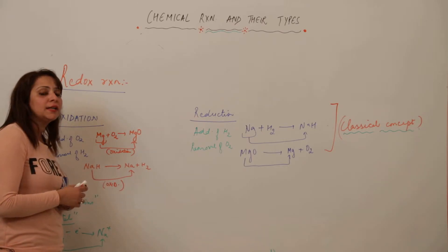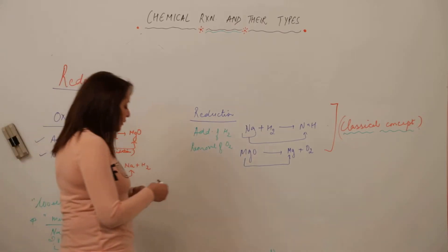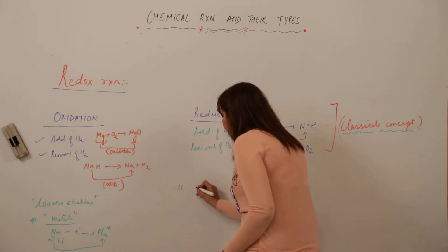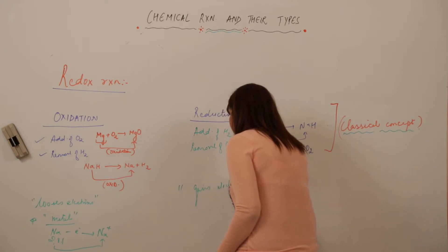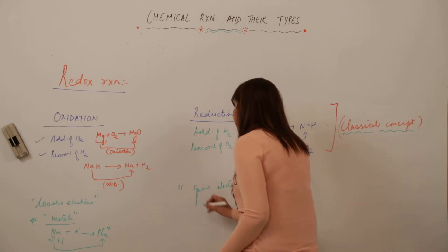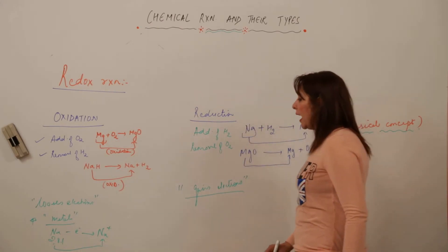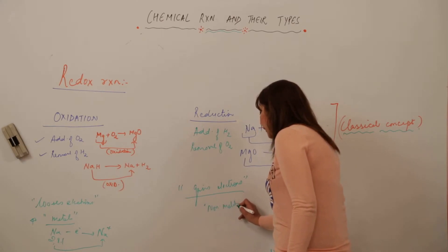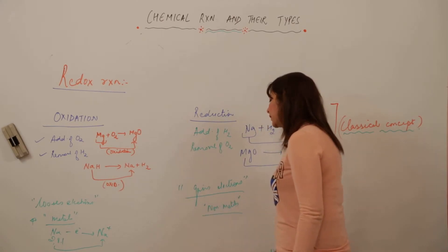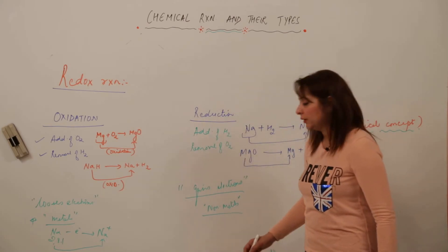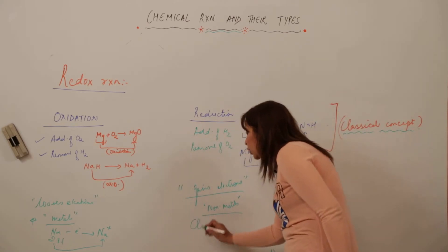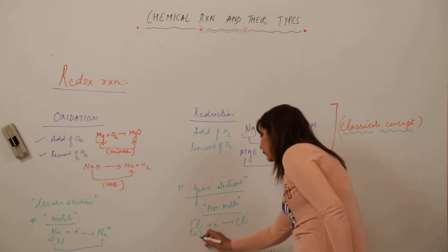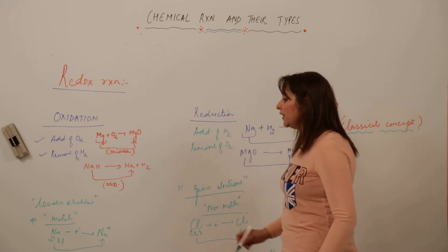For reduction on the basis of the electronic concept: any element that gains or accepts electrons is said to be reduced. Non-metals are electron acceptors, so non-metals show reduction. For example, chlorine has 2,7 electrons; it gains one electron to form Cl⁻. Whether they lose or gain 1 or 2 electrons, the number hardly matters — what matters is whether they are losing or gaining.